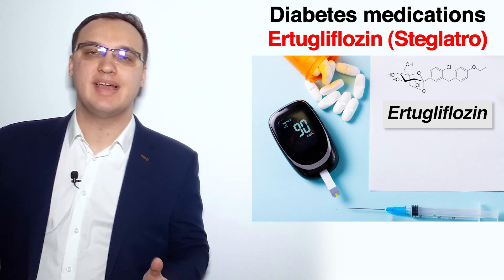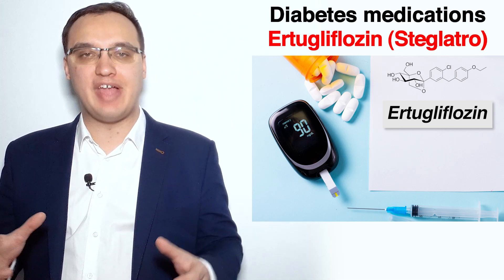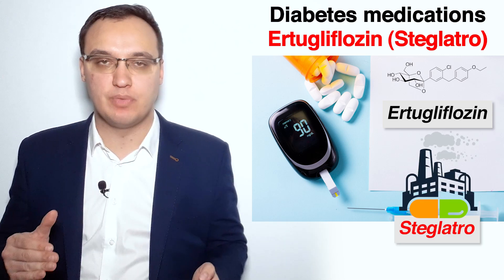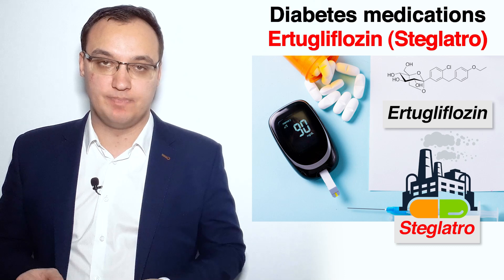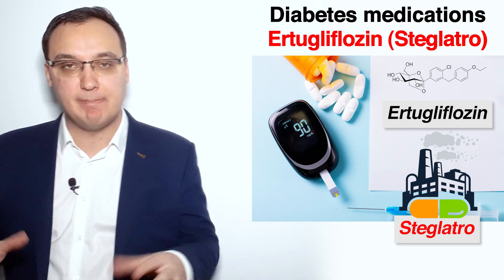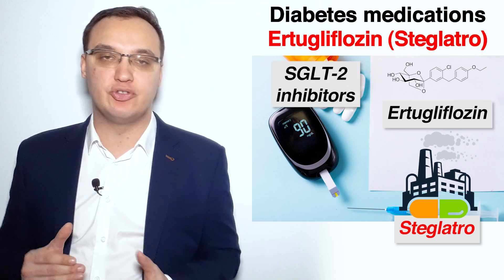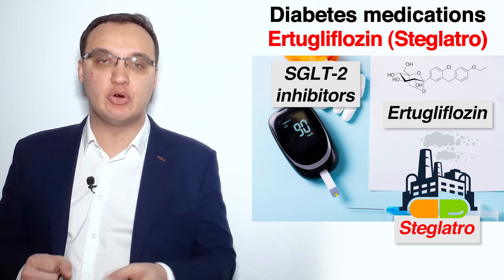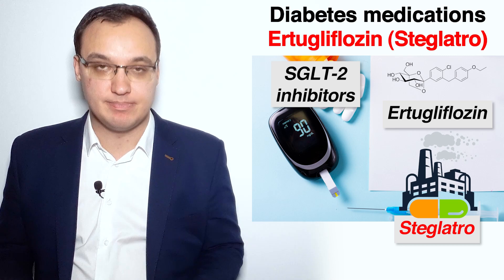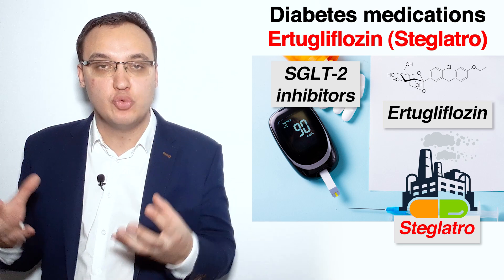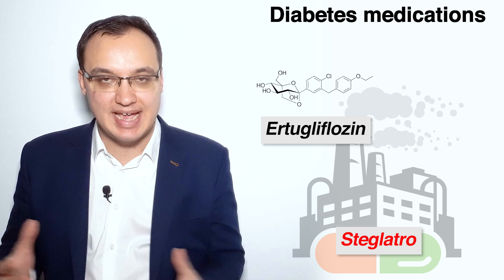Today we will look at ertugliflozin. The trade name of ertugliflozin is Steglatro, and from now on I will refer to ertugliflozin as Steglatro. Ertugliflozin belongs to the group of medications called SGLT2 inhibitors. Please check the video about SGLT2 inhibitors to understand the mechanism of this group of medications.